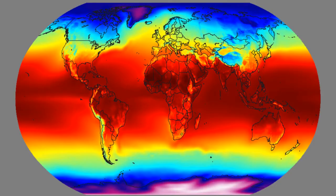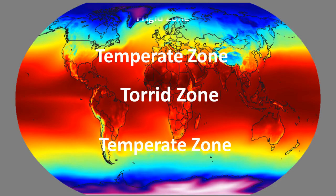Let us study about the heat zones. The earth can be divided into three different zones on the basis of the amount of heat received from the sun. The three different heat zones are the torrid zone, the temperate zone, and the frigid zone.